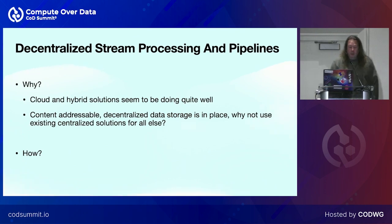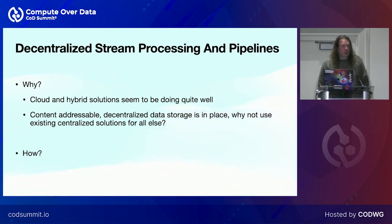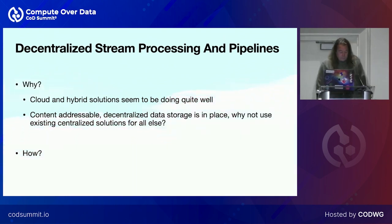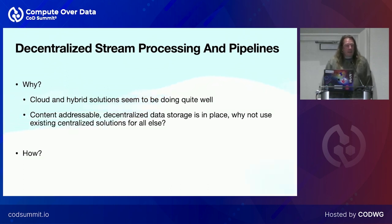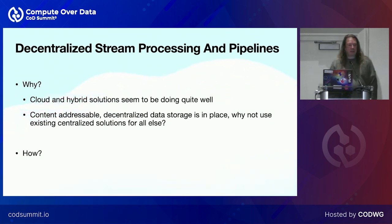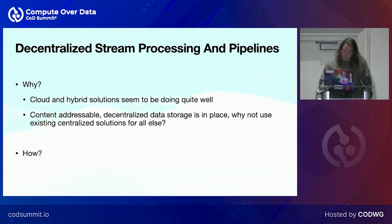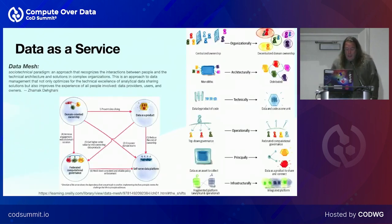So why talk about decentralized stream processing and pipelines? It looks like everything is working and there's a huge ecosystem, a lot of it open source. And even if you have content addressable storage like Filecoin, why not just build on centralized cloud provider offerings? And if you do it, how do you do it?